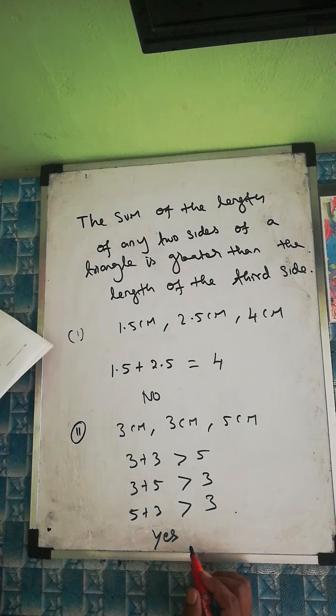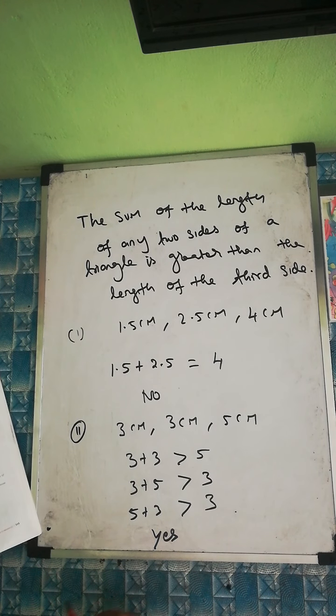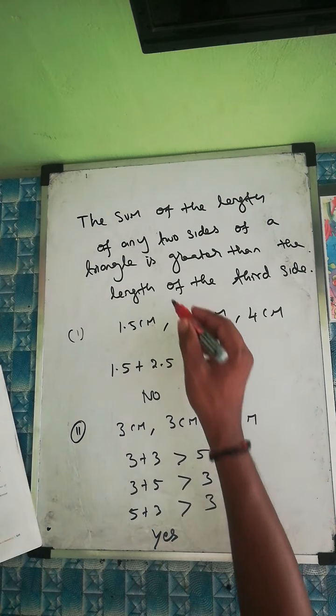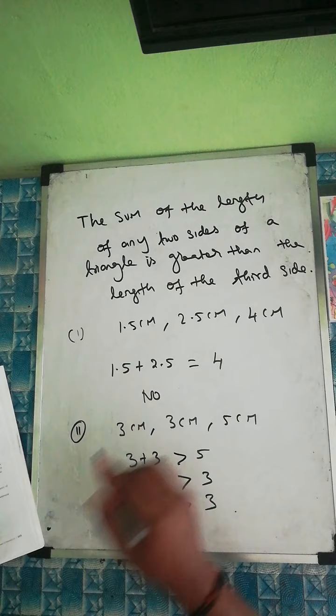Since the sum of the length of any two sides is greater than the third side in all cases, the answer is yes — it is possible to construct this triangle. You can try questions three and four on your own.